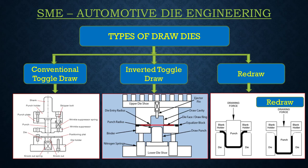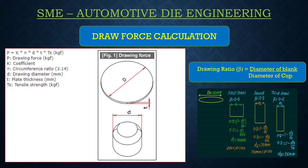This is a simple draw force calculation. The drawing force is the product of coefficient times pi times drawing diameter times thickness times tensile strength. For the coefficient, use the thumb rule: first draw 50%, second draw 30%, and third draw 20%. To identify the draw ratio, use the formula: diameter of the blank divided by diameter of the cup.